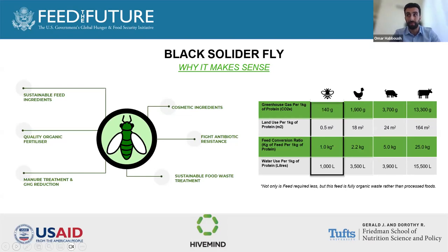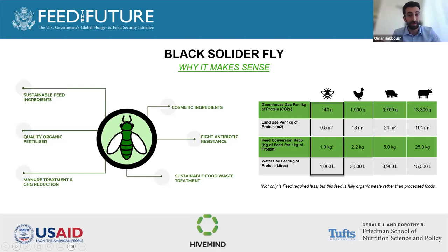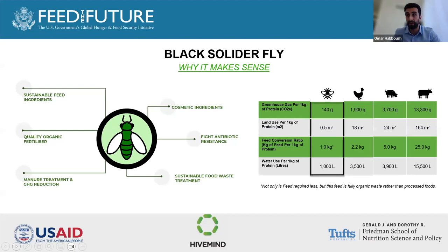The amount of land use by black soldier flies is substantially less than traditional livestock. The conversion ratio — the required level of input — is much less. The actual inputs for a black soldier fly are waste, whereas the inputs for livestock like chicken, pigs, and cows are actually crops. As Seta mentioned, we're coming potentially across a water shortage or water crisis over the coming years, and the required use of water to produce one kilogram of protein using black soldier flies is also substantially less.